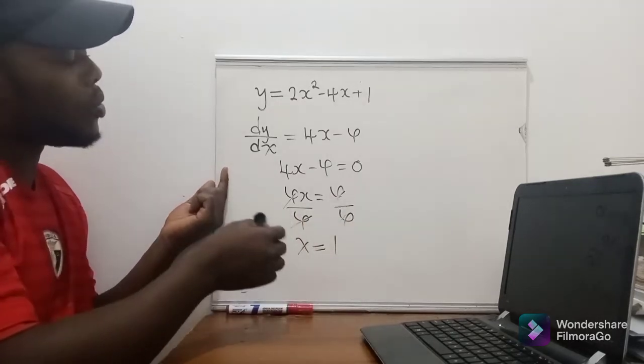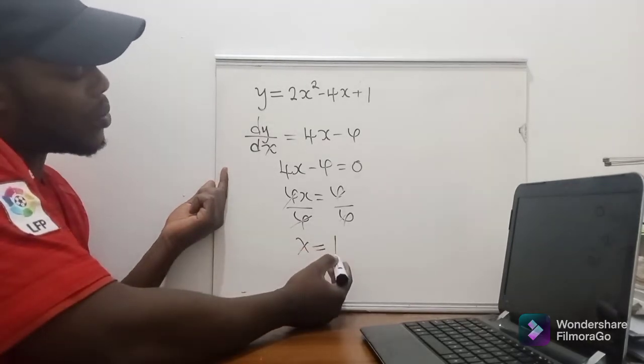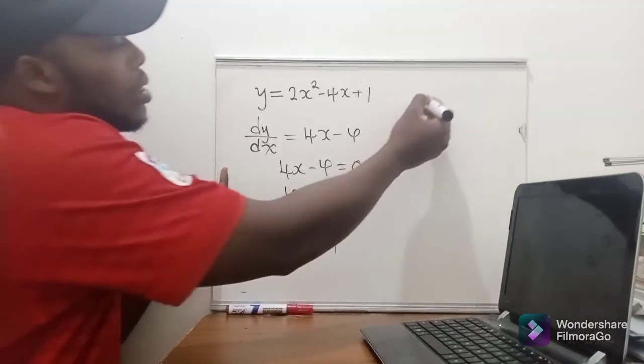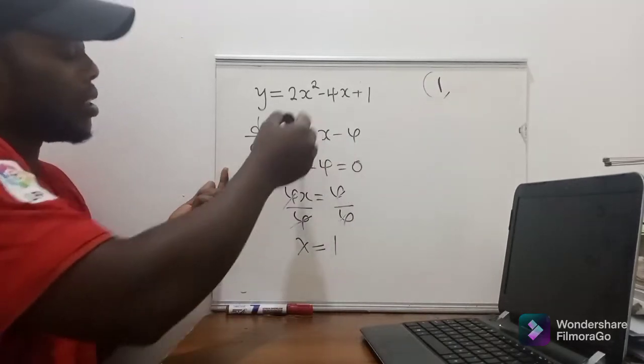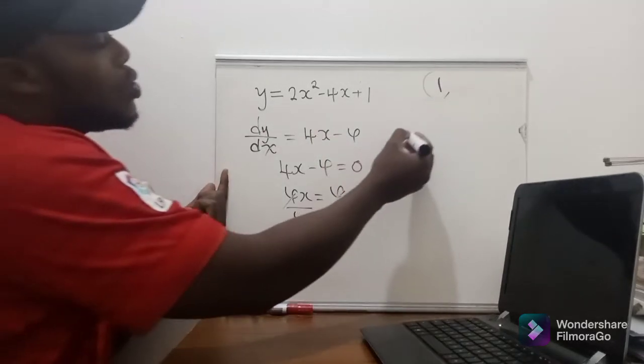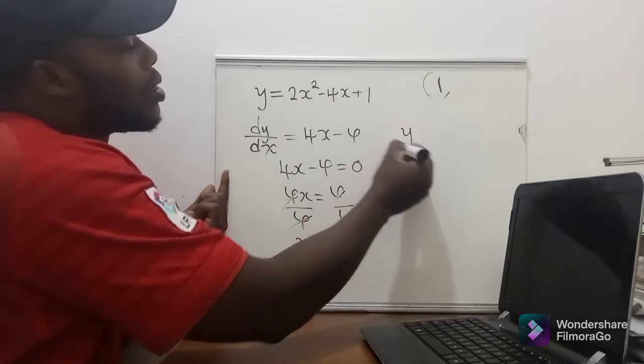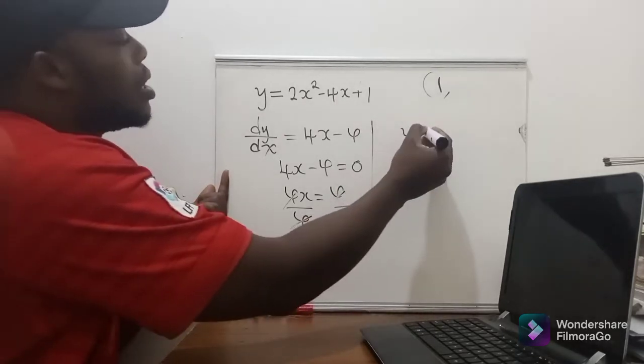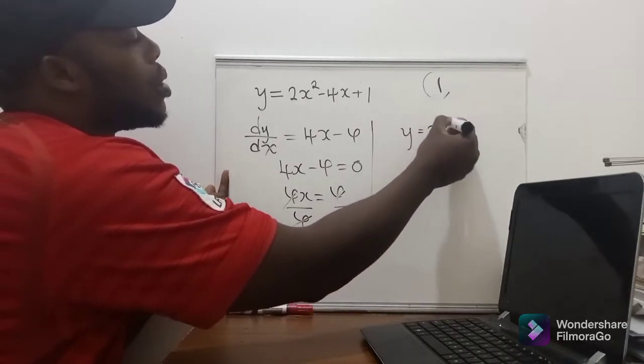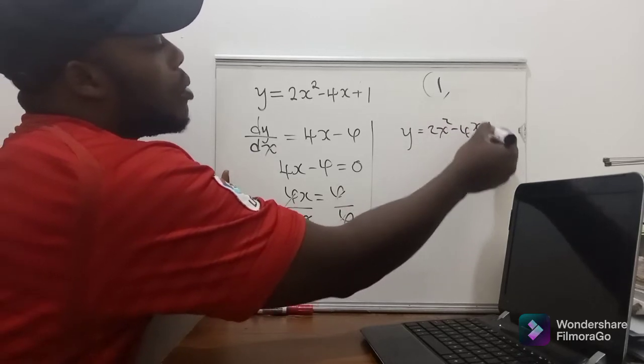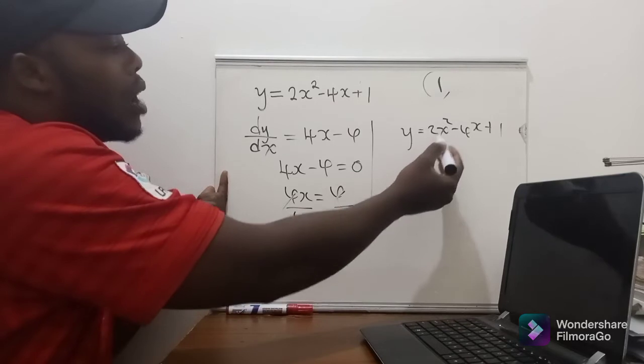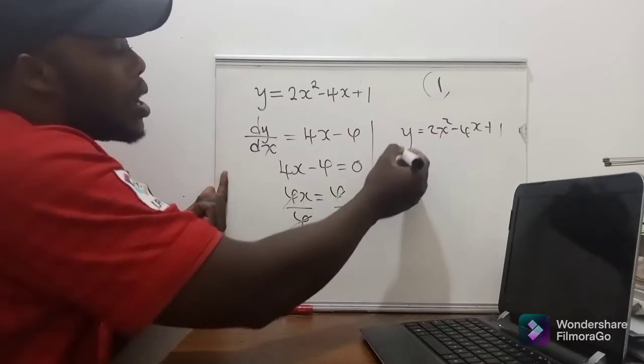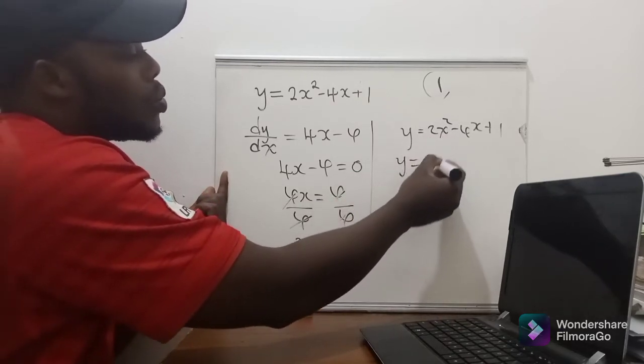So now since we found the x value, it's 1 comma... we need to find the y value. So how do we find the y value? You just say y is equal to 2x squared minus 4x plus 1. So you just replace x with 1 here, so it will be y is equal to 2...